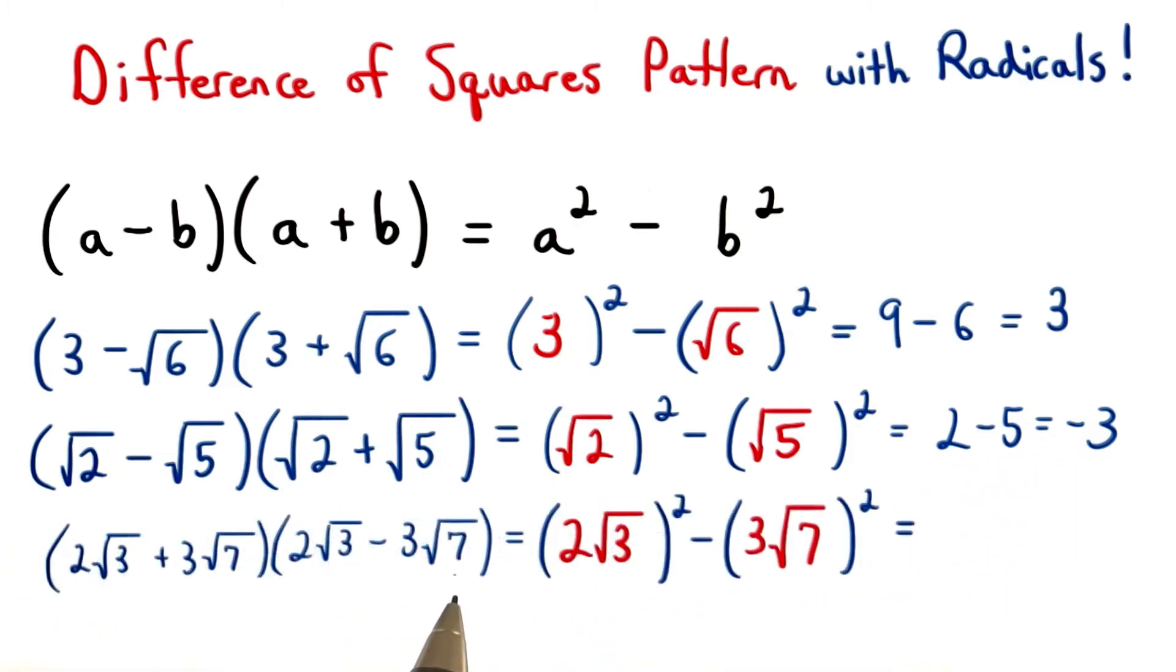For this last difference of squares, a is 2 root 3, and b is 3 root 7. Here's where we want to be careful. We want to square this 2 and the square root of 3. We know 2 squared is 4, and the square root of 3 squared is 3.